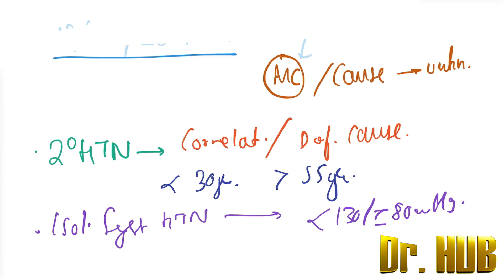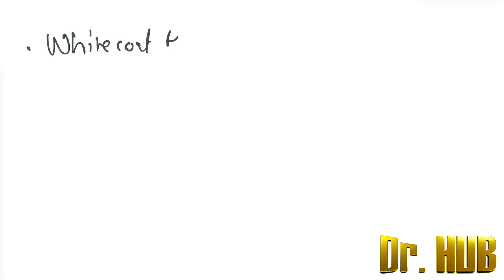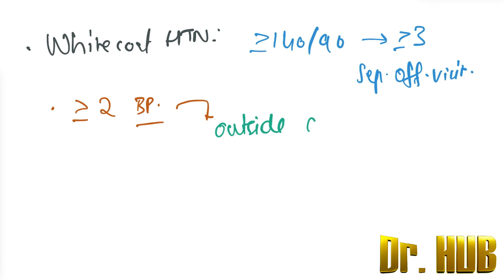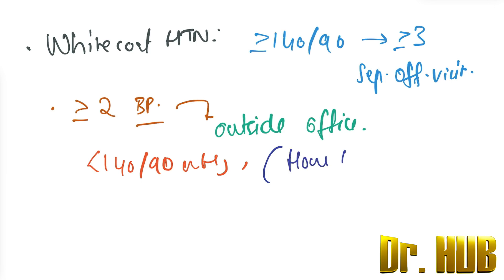Lastly, we have white coat hypertension. In white coat hypertension, the office blood pressure is greater than or equal to 140/90 mmHg on three or more separate office visits. Additionally, two or more blood pressure measurements taken outside the office are less than 140/90 mmHg, frequently using home blood pressure monitoring.